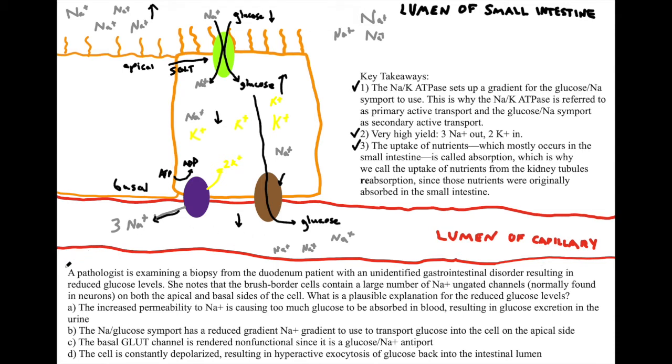So speaking of questions, let's jump right into our question that's been lurking through this video. A pathologist is examining a biopsy—a doctor goes in and cuts out a little piece of the small intestine—from the duodenum, which is the first part of our small intestine, of a patient with an unidentified gastrointestinal disorder resulting in reduced glucose levels. She notes that the brush border cells contain a large number of Na+ ungated channels, normally found in neurons, on both the apical and basal sides of the cell. What is a plausible explanation for the reduced glucose levels? I'll give you guys a minute to think about that one.